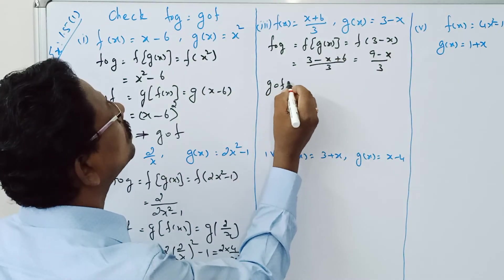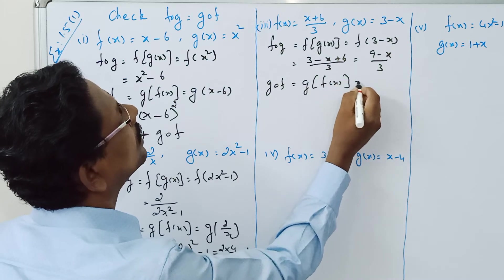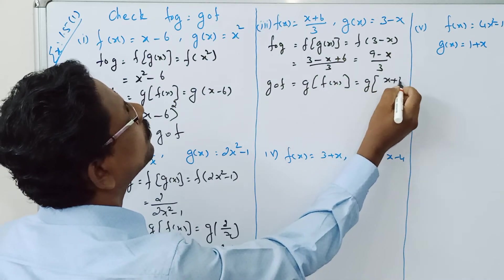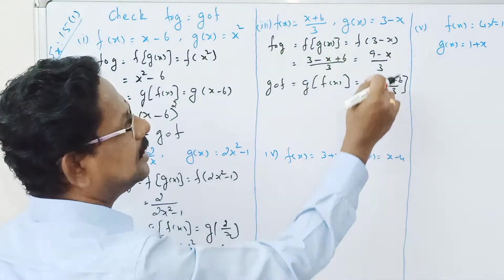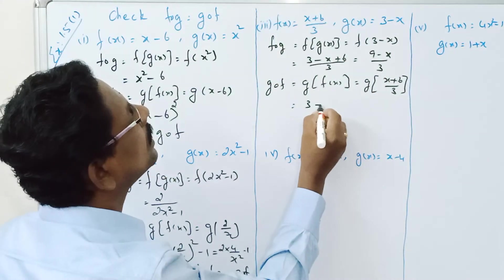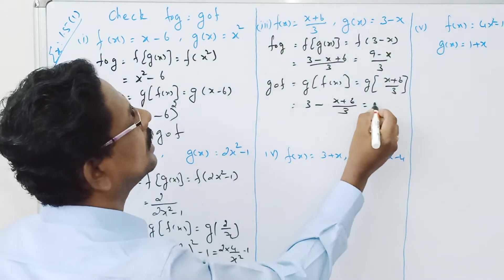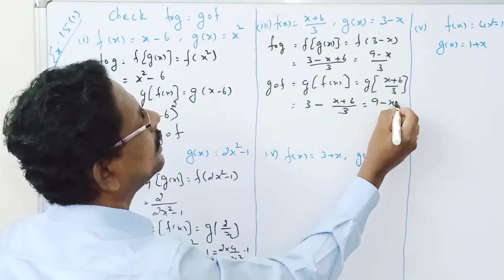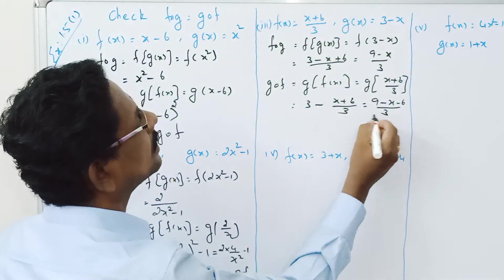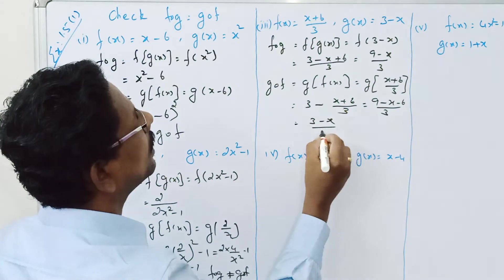Now G composition F — that is G of F of X — is equal to G of (X plus 6) divided by 3. Applying G of X equals 3 minus X: which equals 3 minus (X plus 6) divided by 3, giving 9 minus X minus 6 divided by 3, which is equal to 3 minus X divided by 3.